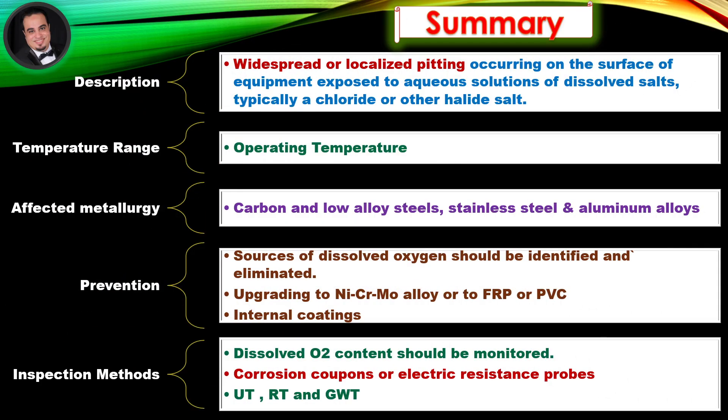Summary. Description: widespread or localized pitting occurring on the surface of equipment exposed to aqueous solutions of dissolved salts, typically a chloride or other halide salt. Temperature range: operating temperature. Affected metallurgy: carbon and low alloy steels, stainless steel, and aluminum alloys. Prevention: sources of dissolved oxygen should be identified and eliminated; upgrade to nickel-chromium-molybdenum alloy, FRP, or PVC; internal coatings. Inspection methods: dissolved oxygen content monitoring, corrosion coupons or electric resistance probes, UT/RT, and guided wave testing.